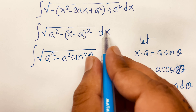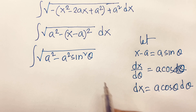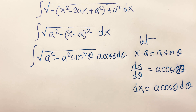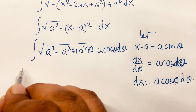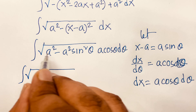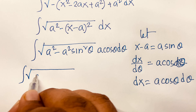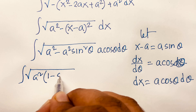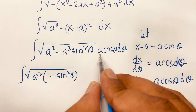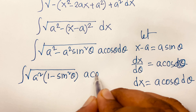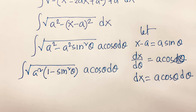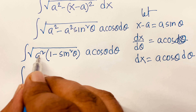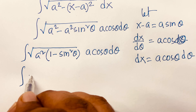Let x − a = a sinθ. Then the derivative of x: dx/dθ = a cosθ, since a is a constant. So dx = a cosθ dθ.